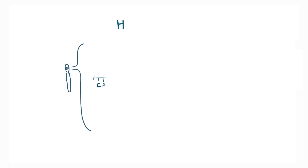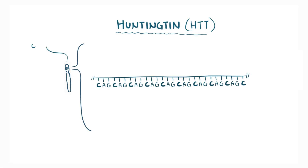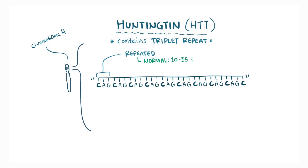In most people, a gene called Huntington, or HTT, on chromosome 4 contains a triplet repeat, where nucleotides C, A, and G are repeated 10 to 35 times in a row. In people with Huntington disease, this repeat goes on for 36 or more times in a row.